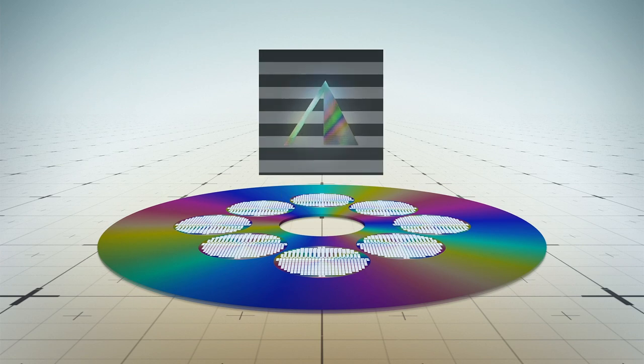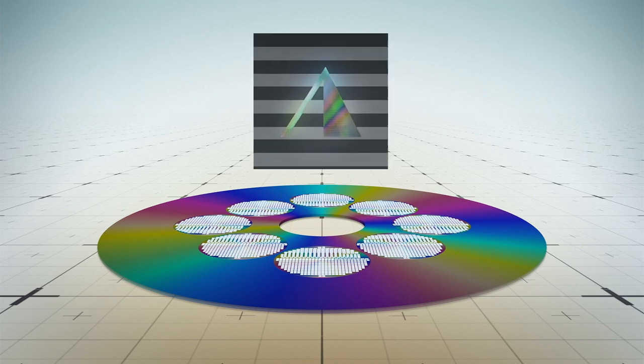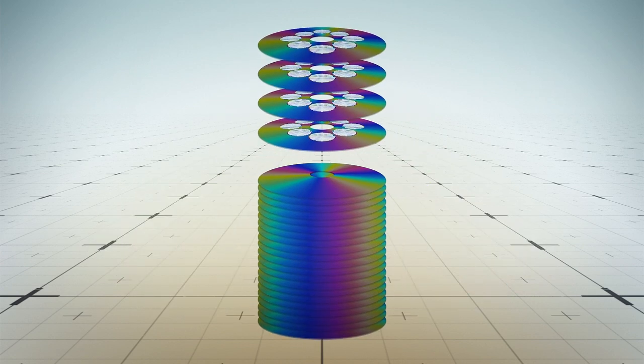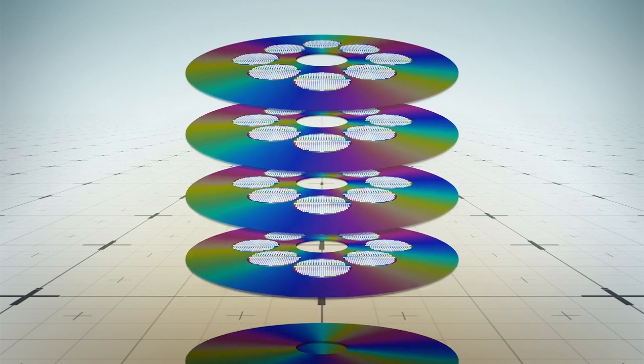Created by the Arch Mission Foundation, the Lunar Library is a DVD-sized archive composed of 25 nickel film disks that are each only 40 microns thick.